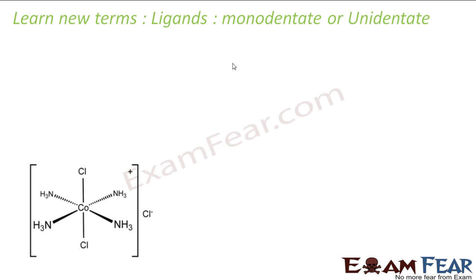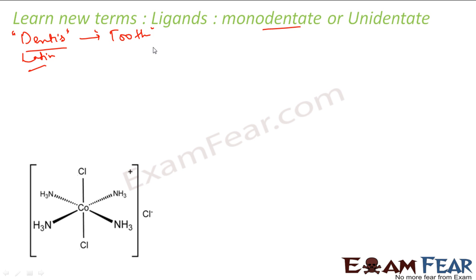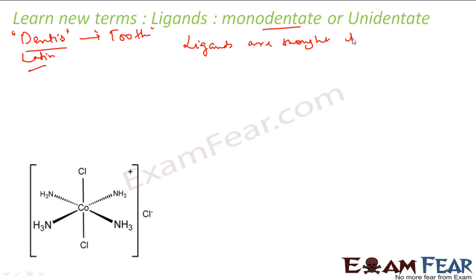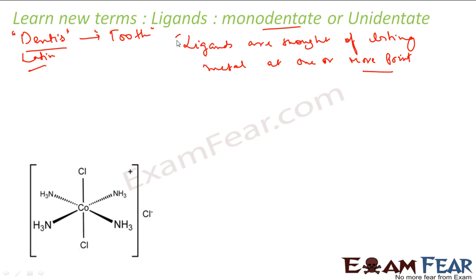This word 'dentate' actually came from the Latin word 'dentis', the same root as 'dentist'. The dentist works with teeth — that is the Latin origin. The reason 'dentate' is used is because these ligands are thought of as biting the metal. So 'dentate' means 'tooth'.